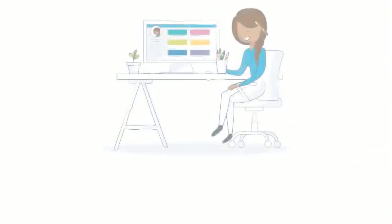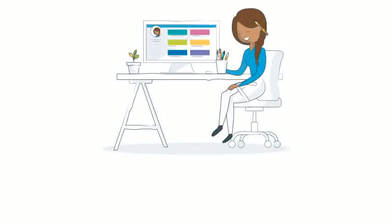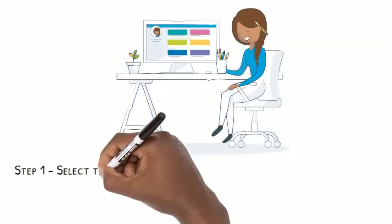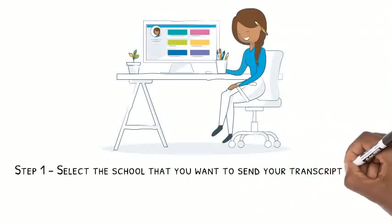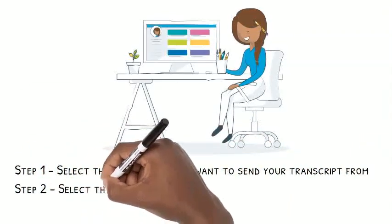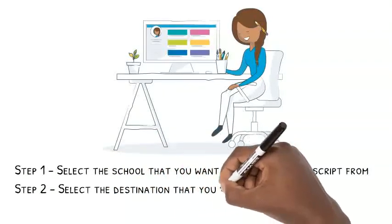Ordering a copy of your official high school or college transcript on Parchment.com is fast and easy. Step 1. Select the school that you want to send your transcript from. Step 2. Select the destination that you want your transcript sent to.